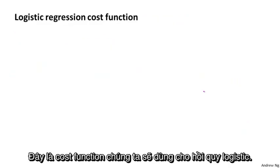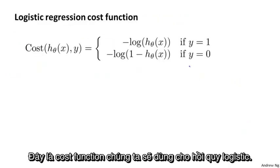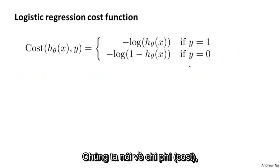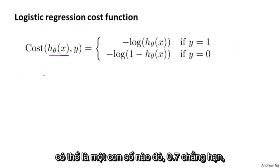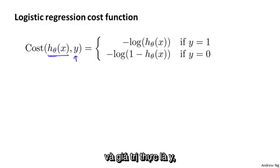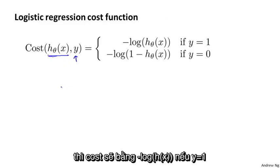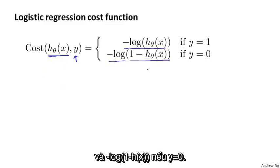So we want a different, convex cost function so we can apply gradient descent and be guaranteed to find the global minimum. Here's the cost function we're going to use for logistic regression: the cost the algorithm pays if it outputs h(x) is minus log h(x) if y equals 1, and minus log(1 minus h(x)) if y equals 0.